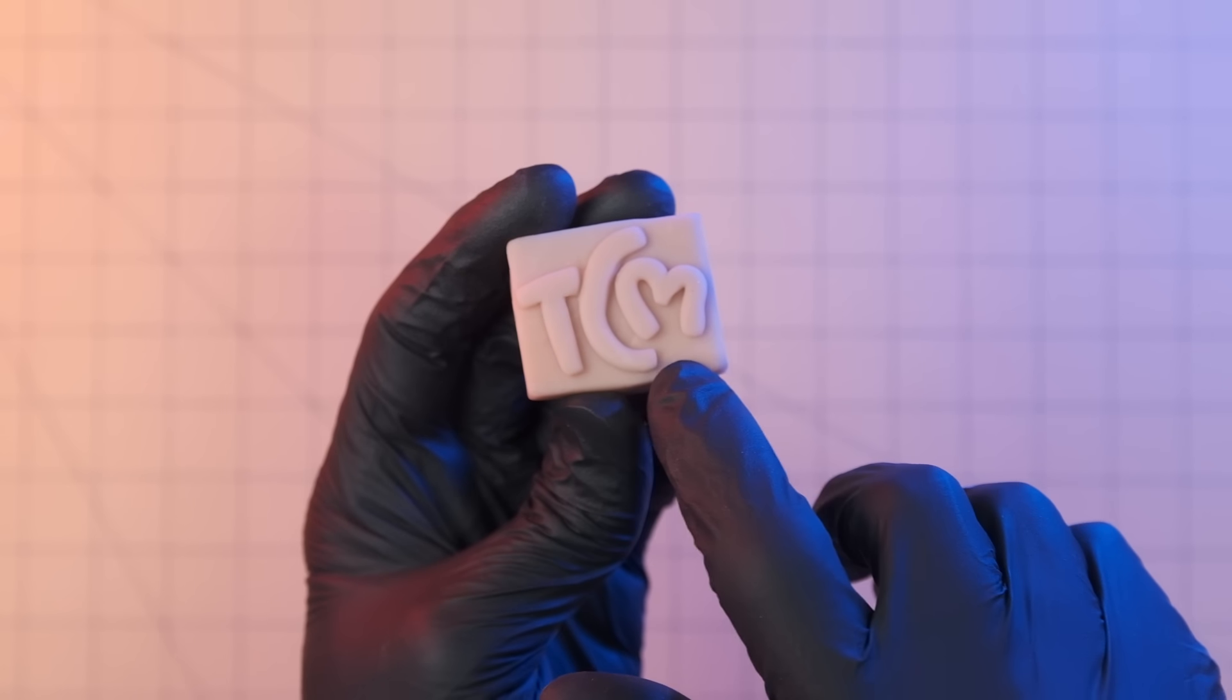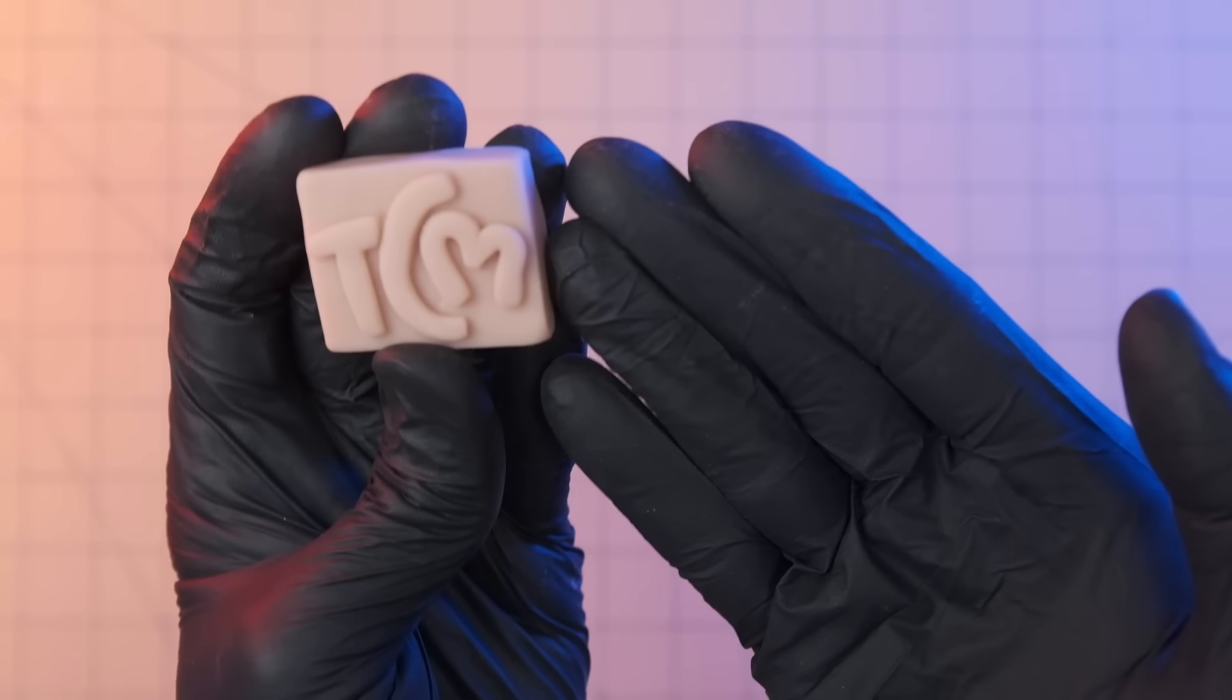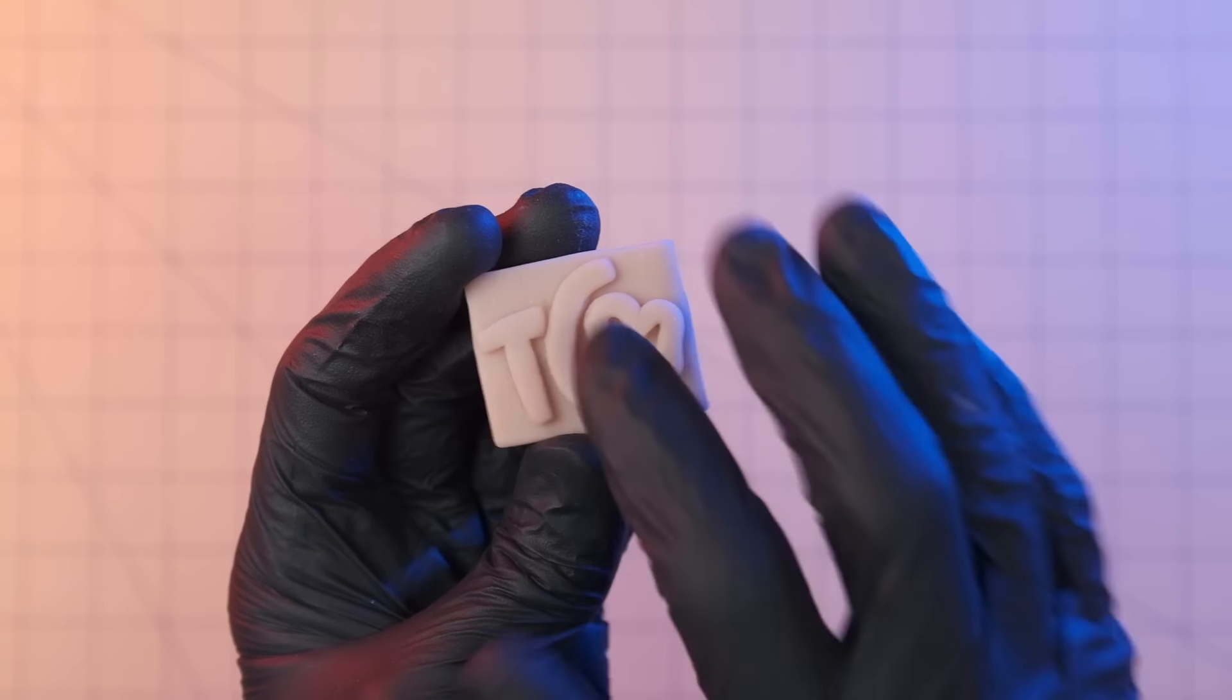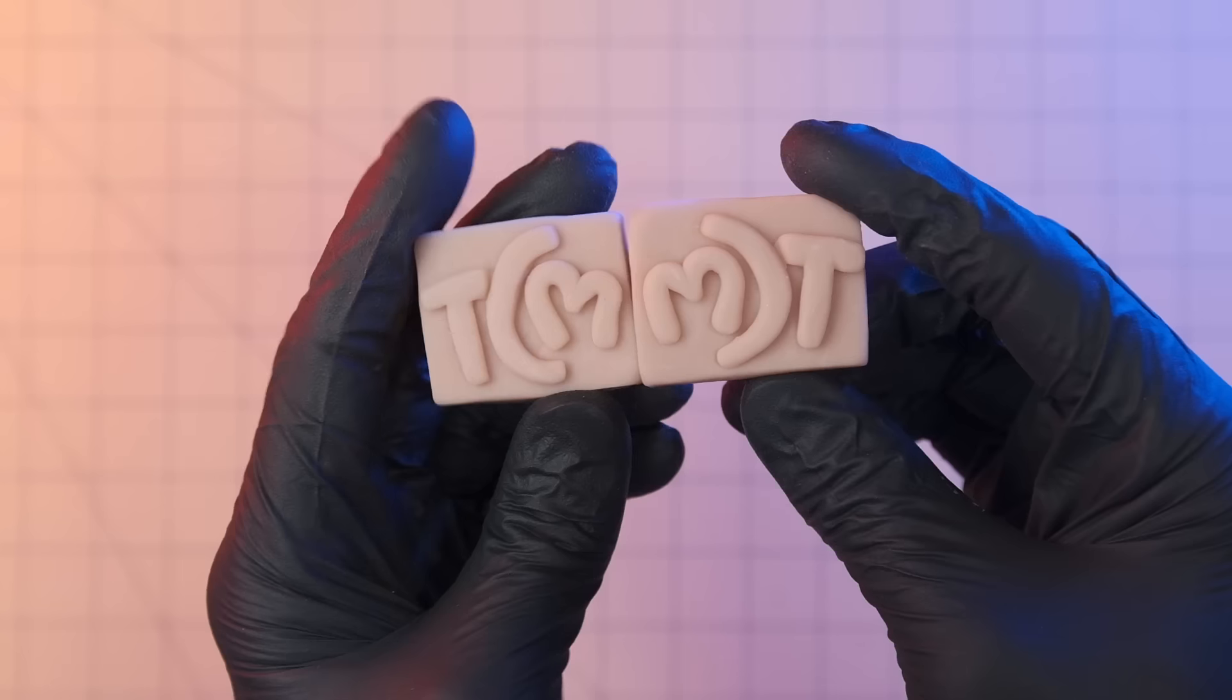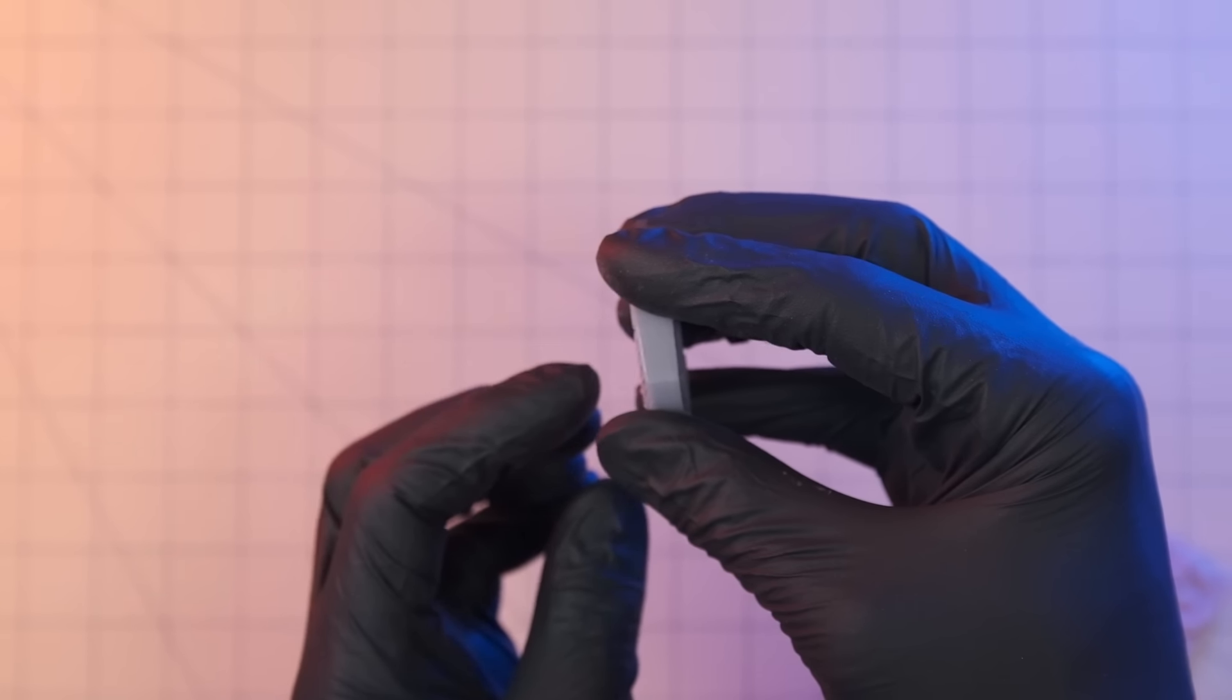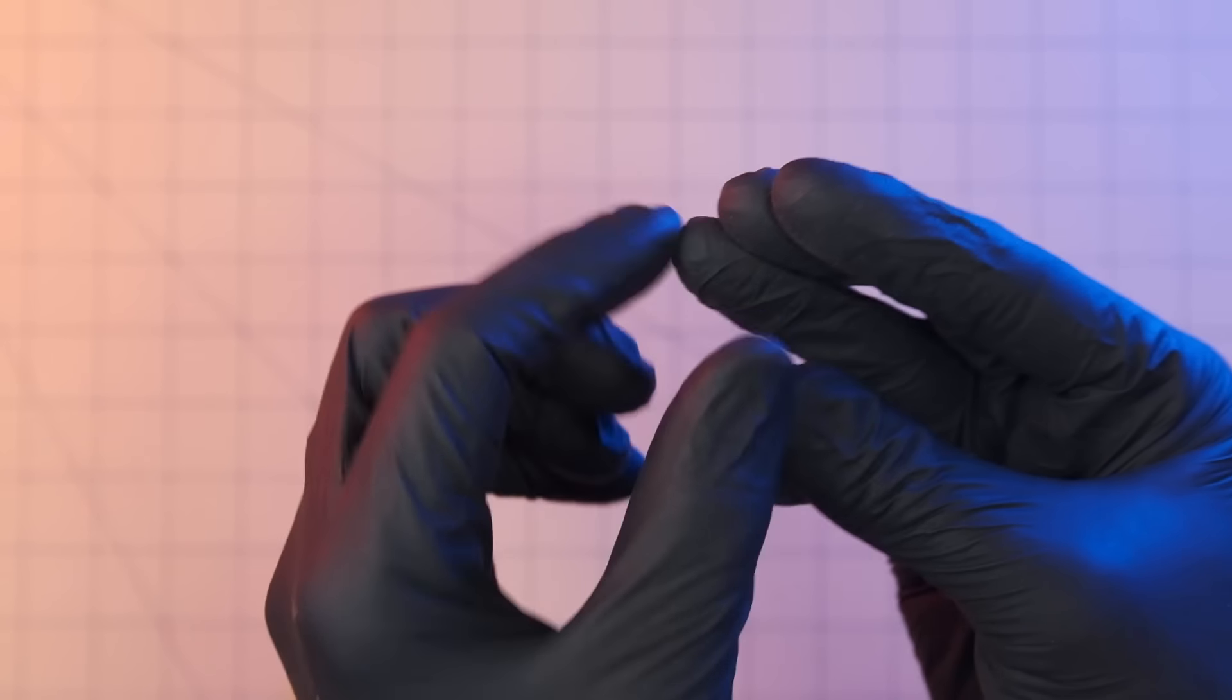But the issue with that is when we go to stamping, it's going to be backwards. Look at this, it's going to say MCT, which by the way, medium chain triglyceride oils come from coconuts. You need to make a backwards one. So what we're going to do is a two-step process. We're going to make a mold of this, and then with that mold, we're going to make us a rubber copy.